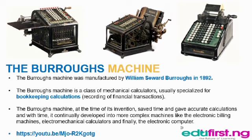The Burroughs machine. What is the Burroughs machine? The Burroughs machine was manufactured by William Seward Burroughs in 1892. It is a class of mechanical calculators usually specialized for bookkeeping calculations — that is, the recording of financial transactions. At the time of its invention, the Burroughs machine saved time and gave accurate calculations, and with time it continually developed into more complex machines like electronic billing machines, electromechanical calculators, and finally the electronic calculator.